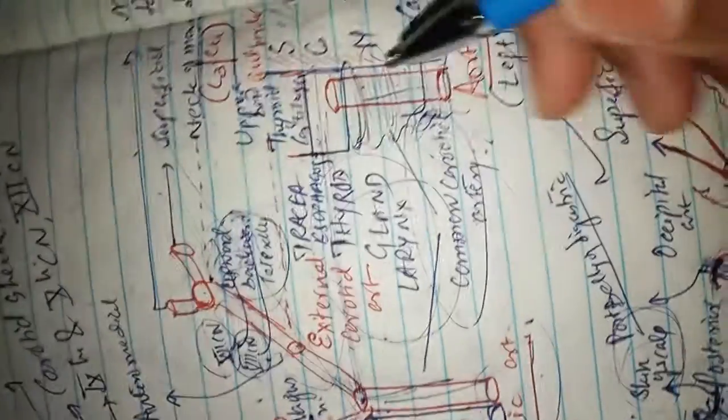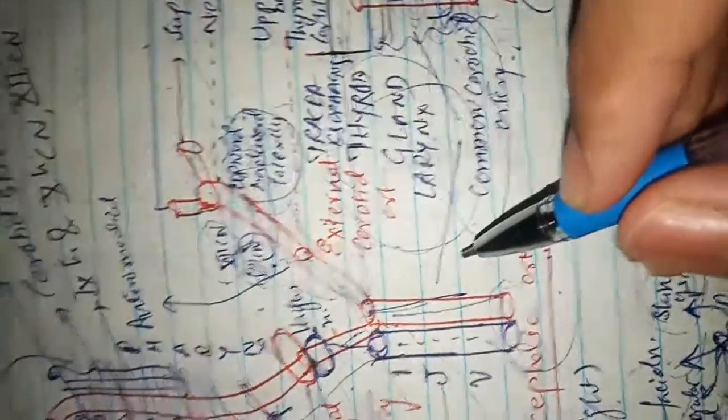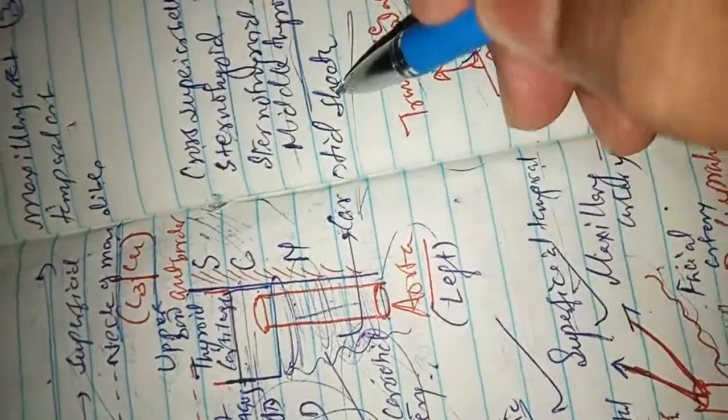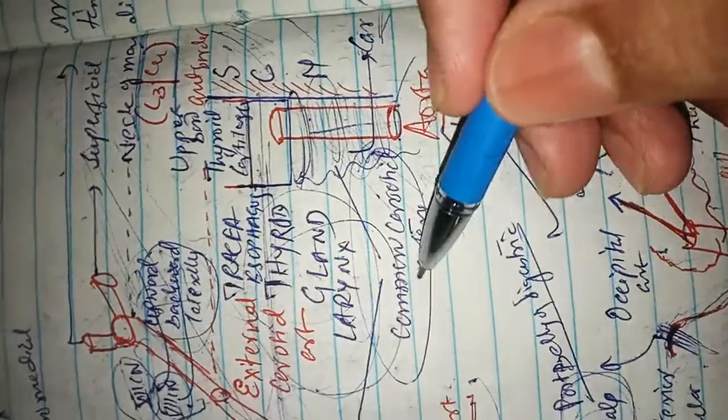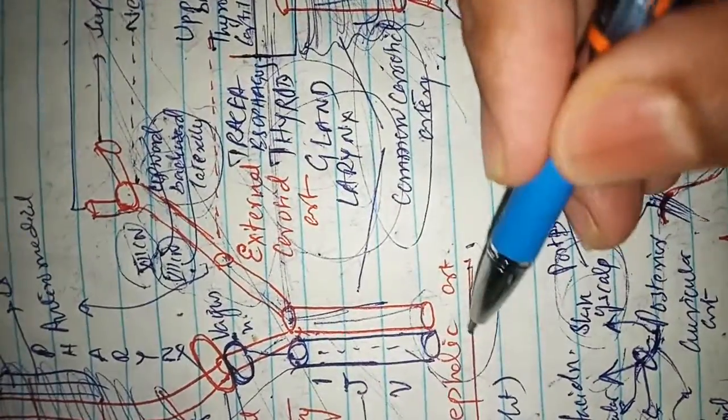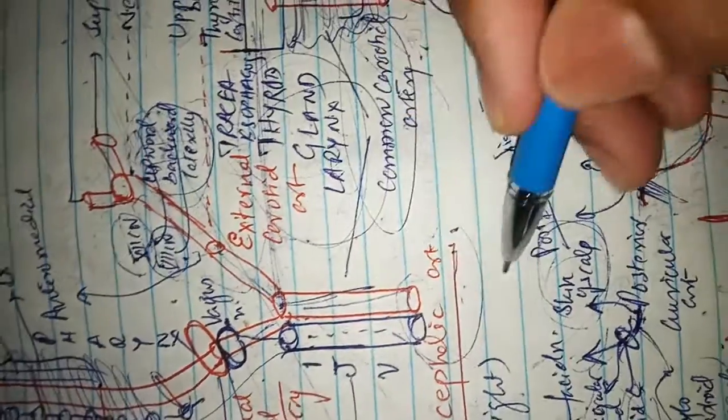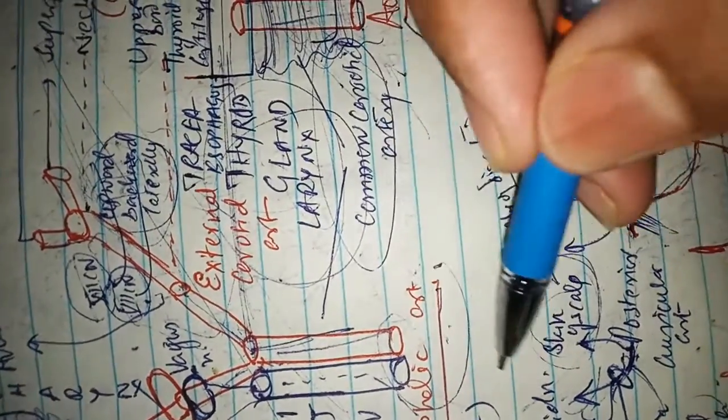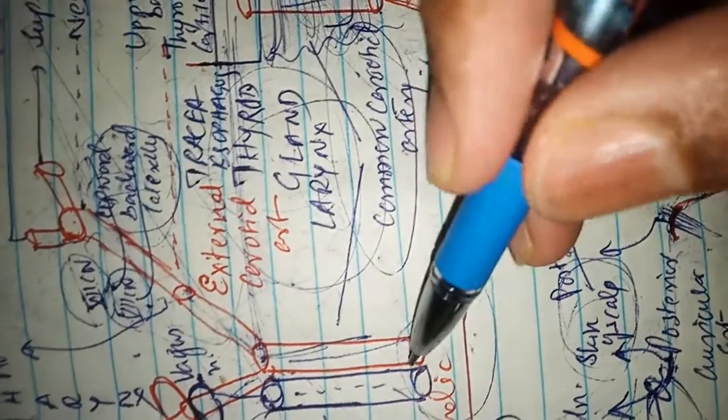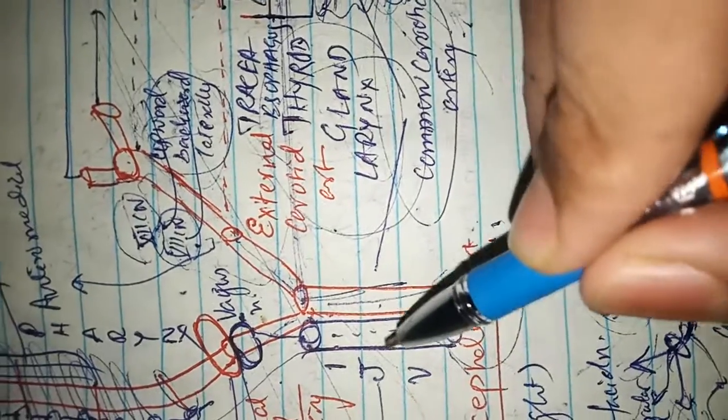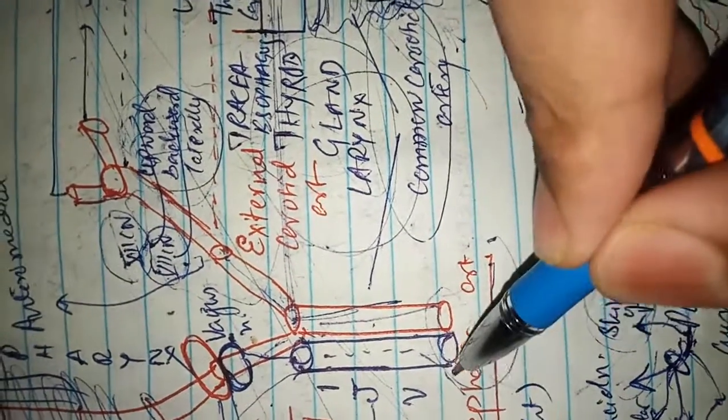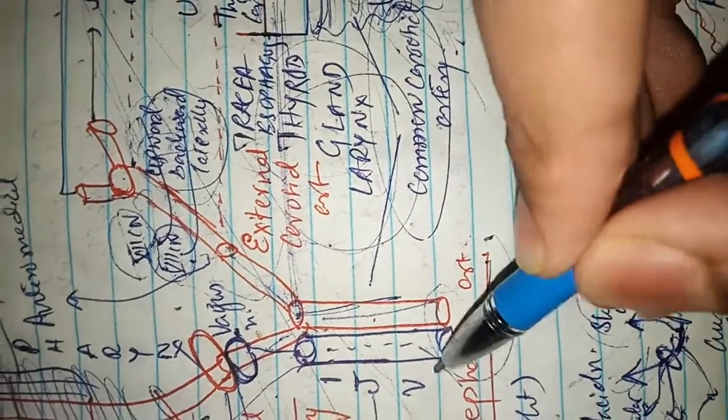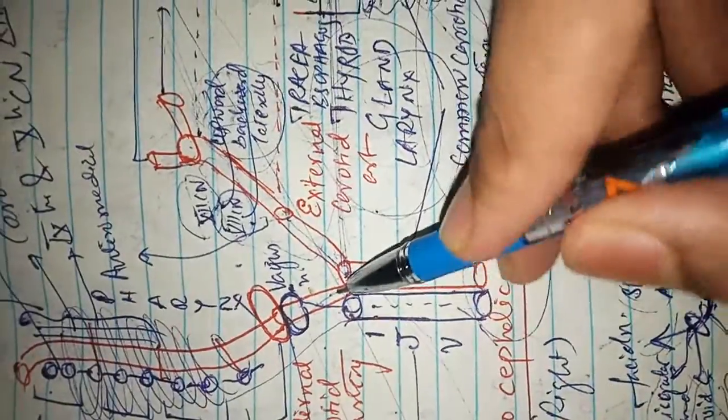The common carotid artery is enclosed by the carotid sheath and begins from the thorax behind the manubrium, center of the manubrium, ascends posterior behind the sternoclavicular joint and enters the neck.